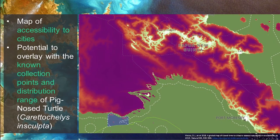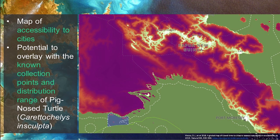Papua New Guinea is also using a UN Biodiversity Lab data layer on accessibility to cities to help address illegal wildlife trade. This map shows the accessibility to cities in southern Papua New Guinea and the Papua province of Indonesia. A map like this can be combined with other maps showing known collection points and the distribution range of the pig-nosed turtle — a targeted species of illegal wildlife trade. Combining data such as these is helping PNG figure out where to collect more information on the trade of the species, including international border movements. PNG is then working with the government of Indonesia to use these data to determine how to better manage these remote border regions.